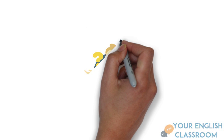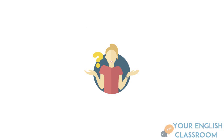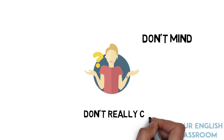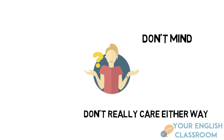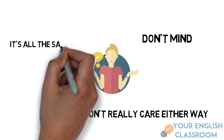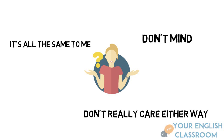Now what if you're in between? You don't really like and you don't really hate. Well, you can say 'I don't mind' — it's a middle ground. You can also say 'I don't really care either way' or 'I'm not really fussed.' Similarly, you can say 'it's all the same to me' — you're in between.